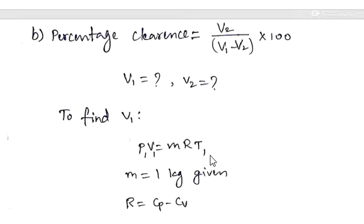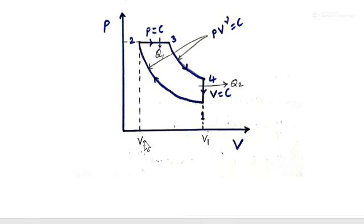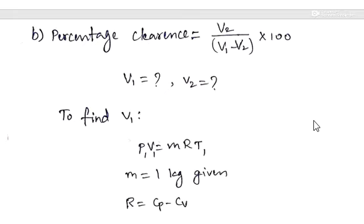For the second part, we calculate the percentage clearance. Percentage clearance is the clearance volume as a percentage of the stroke or swept volume. The formula is: percentage clearance = V2 by (V1 minus V2) into 100. To use this, we need to find V1 and V2.